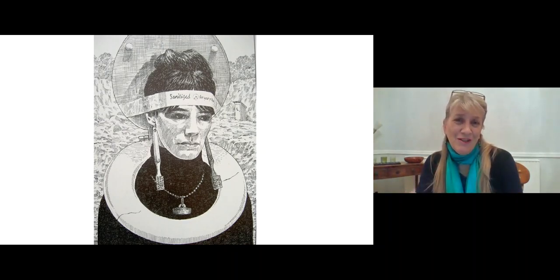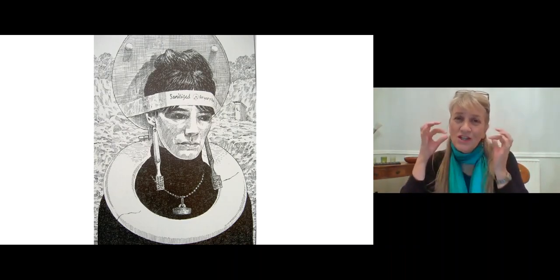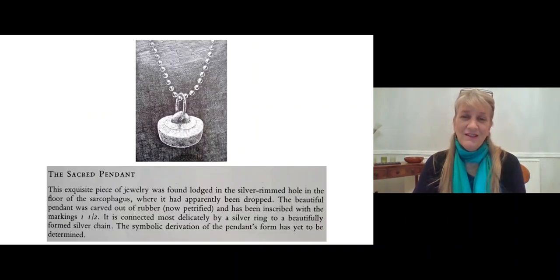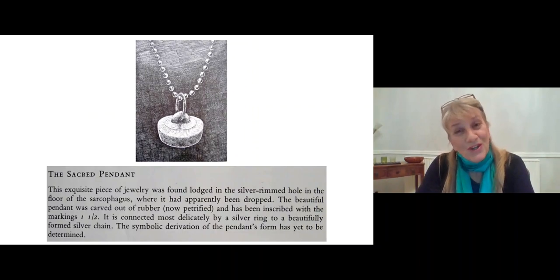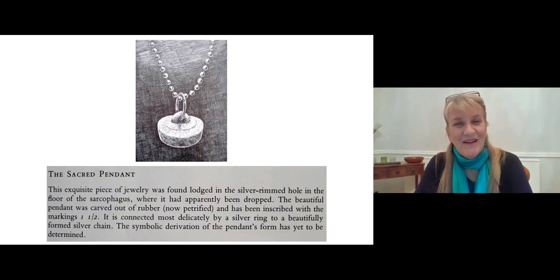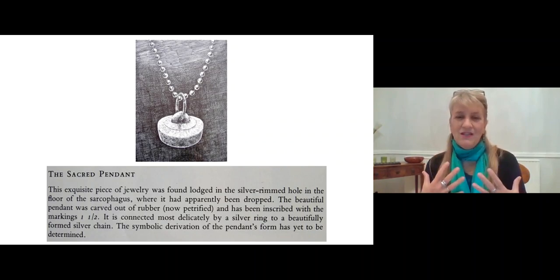He takes the seat from the loo and sees it as a headdress, which would have been worn as shown in the picture. The toothbrushes are interpreted as ceremonial earrings. Other items around the bathroom are interpreted in a similar way, including that object we were looking at a little bit earlier — the bath plug — which he interprets as a sacred pendant.